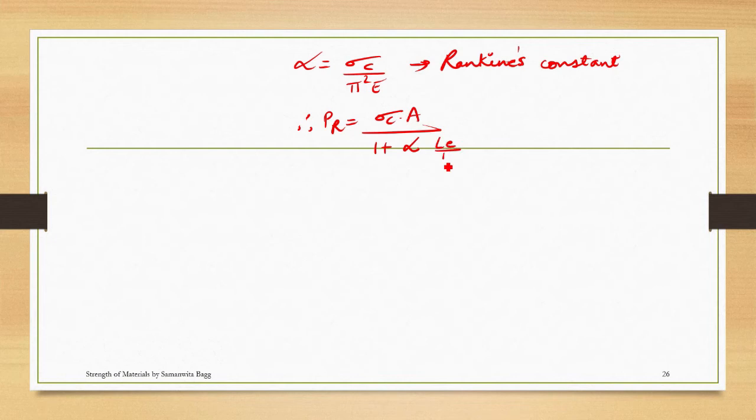Therefore, the formula for PR becomes sigma c into A upon 1 plus alpha into Le upon K the whole square. So this formula is used for calculating the crippling load or critical load by Rankine's method.